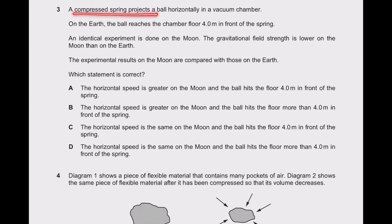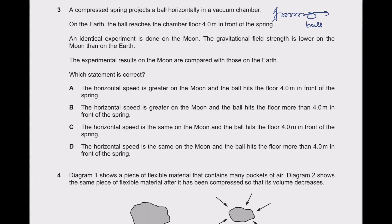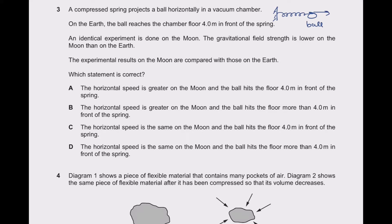Third question: a compressed spring projects a ball horizontally in a vacuum chamber. On Earth, the ball reaches the chamber floor 4 meters in front of the spring. An identical experiment is done on the Moon, where the gravitational field is lower. The experimental results on the Moon are compared with those on Earth. Vacuum chamber means there is no air, so there will be no air resistance — only gravitational force acts on the ball.